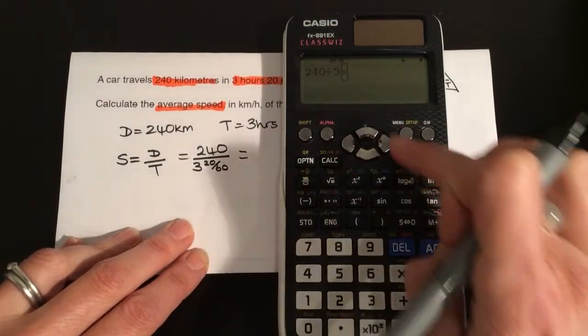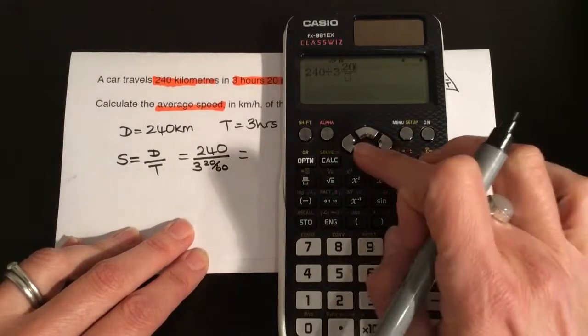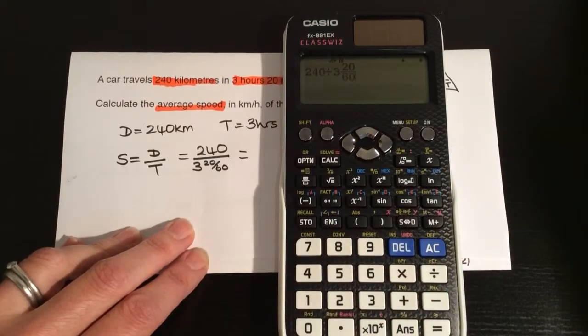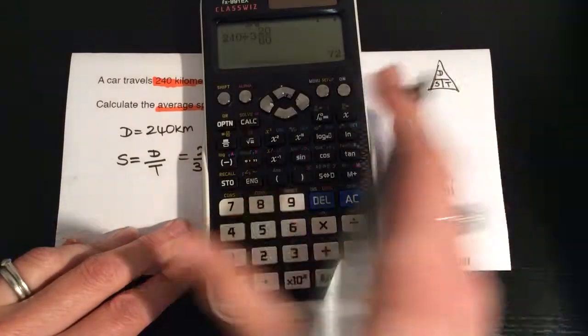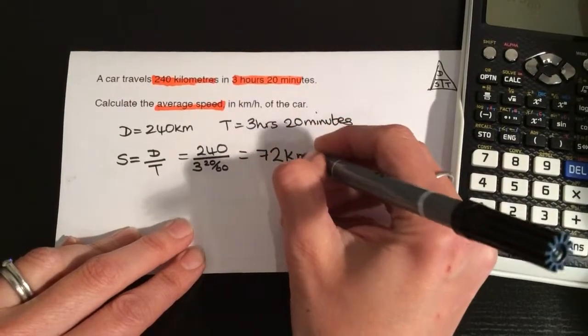So we start by putting in the 3, arrow across, put in the 20, and arrow down to get the bottom box 60. And if we press equals, that is 72 kilometers per hour. So that's kilometers per hour.